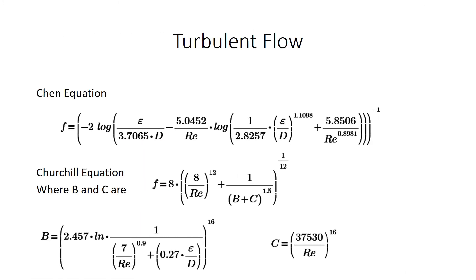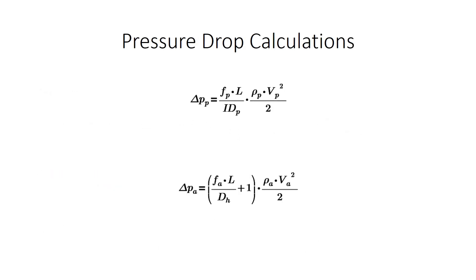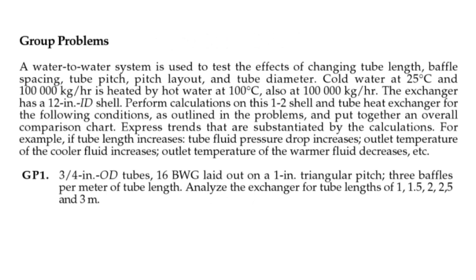For the turbulent flow, both inside the tubes and in the annulus region, we can use the Chen equation or Churchill's equations. They both result in the same friction factor. After we calculate the friction factors for the annulus region and for the tube region, we will use the major loss equations from modified Bernoulli's to calculate the delta P.